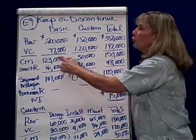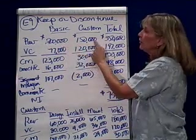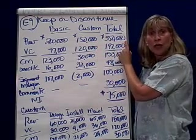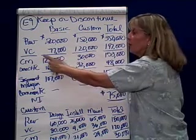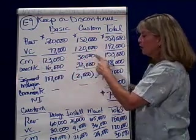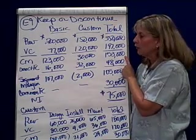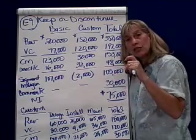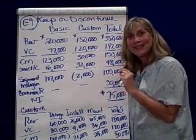As you can see, their revenue from basic web pages is pretty good, their custom web pages has a nice revenue, and overall the company has $350,000 in revenue. After accounting for variable costs for each segment, we have a contribution margin overall of about $153,000.